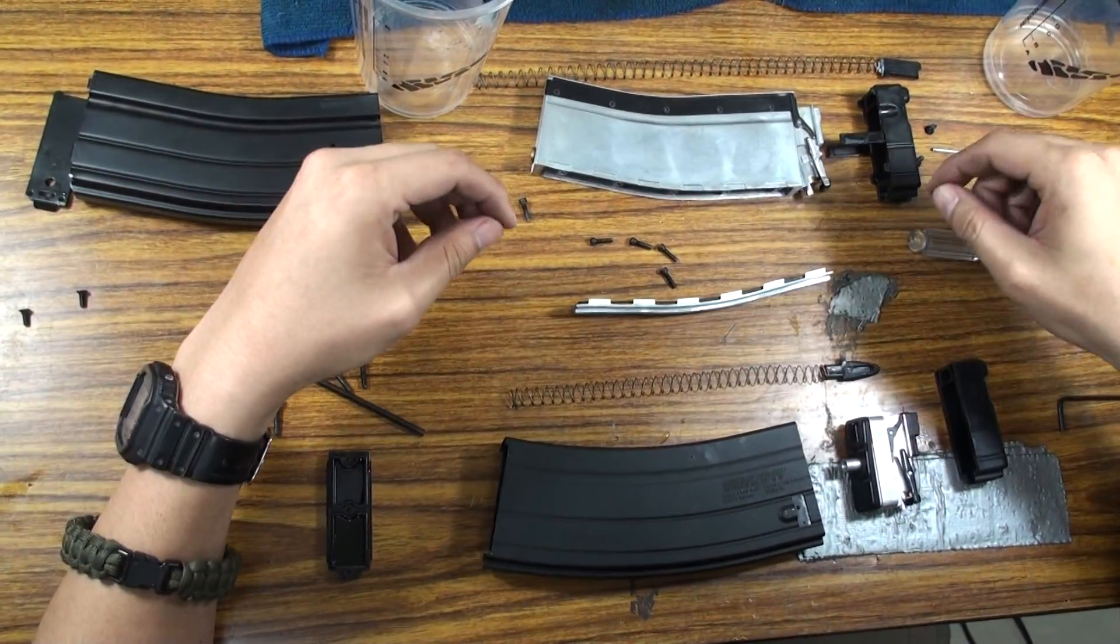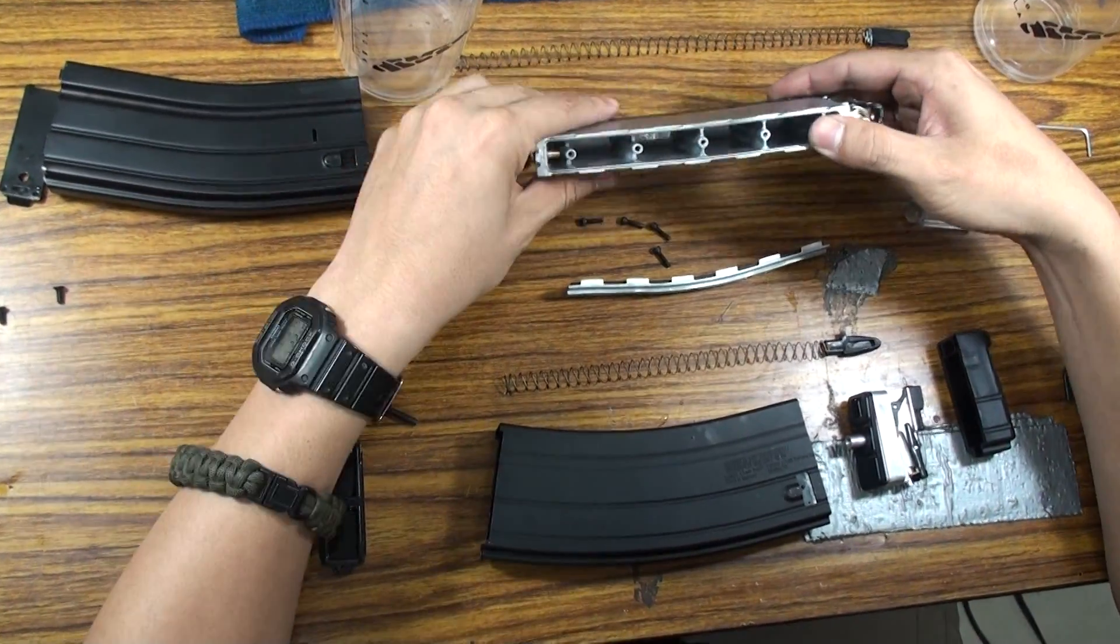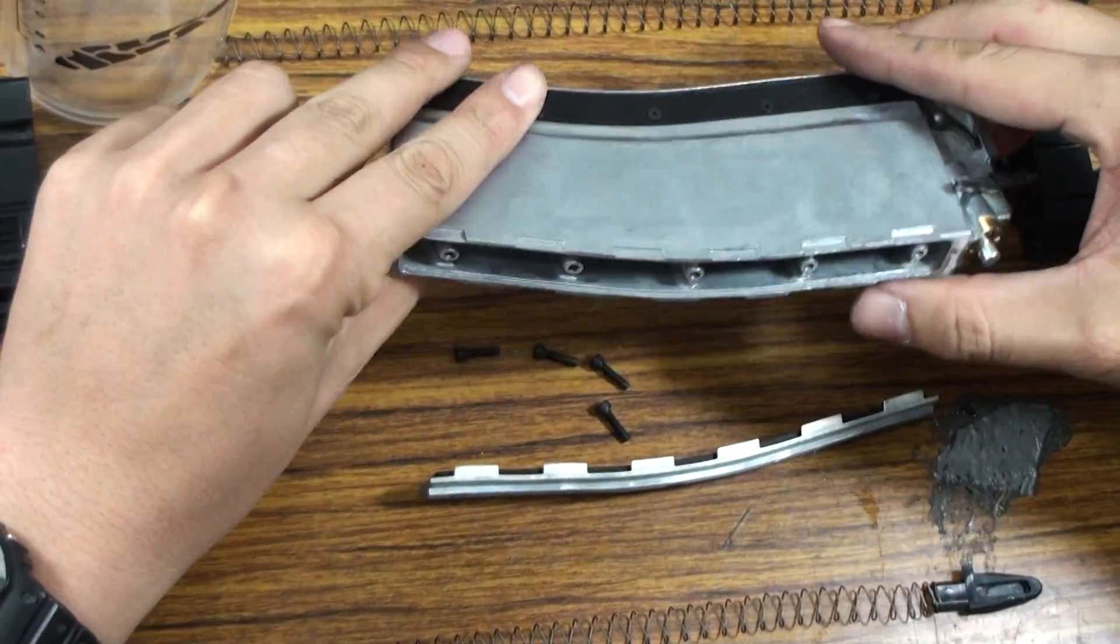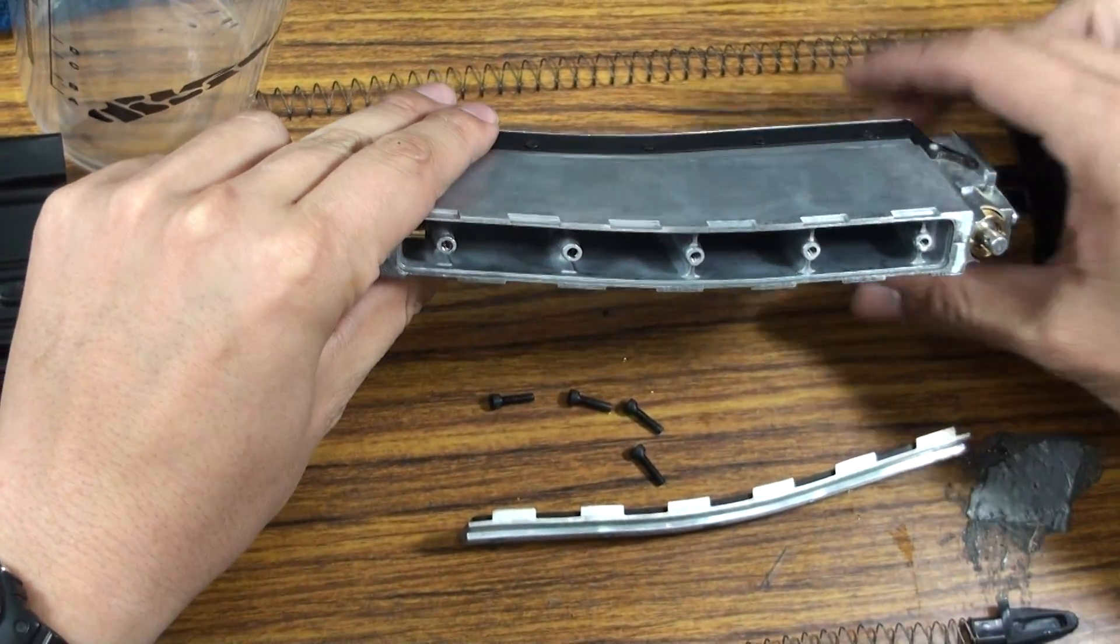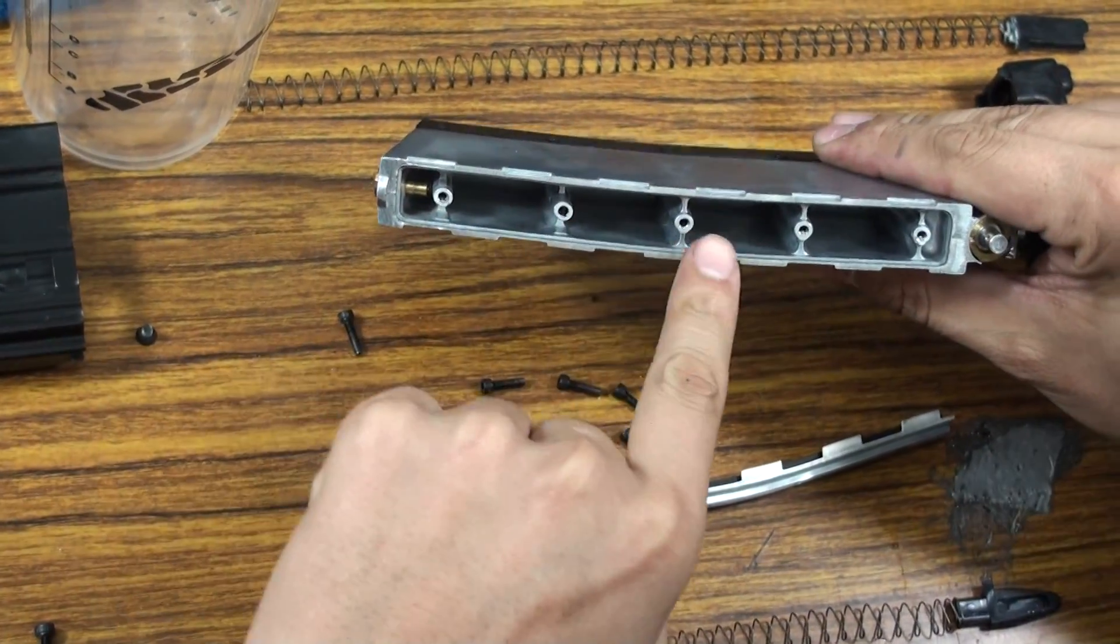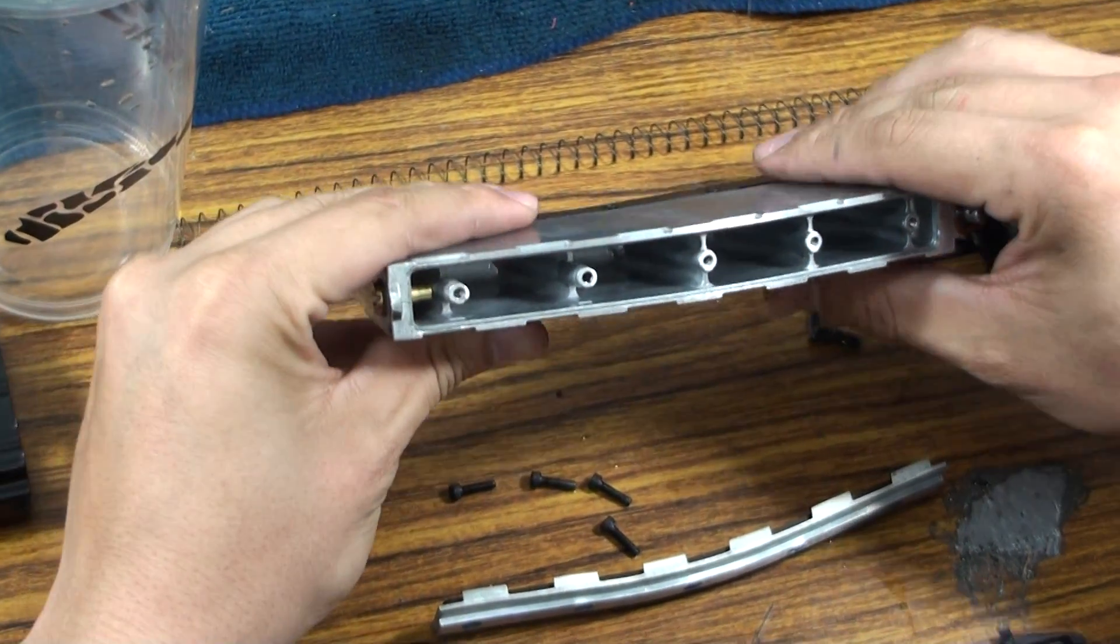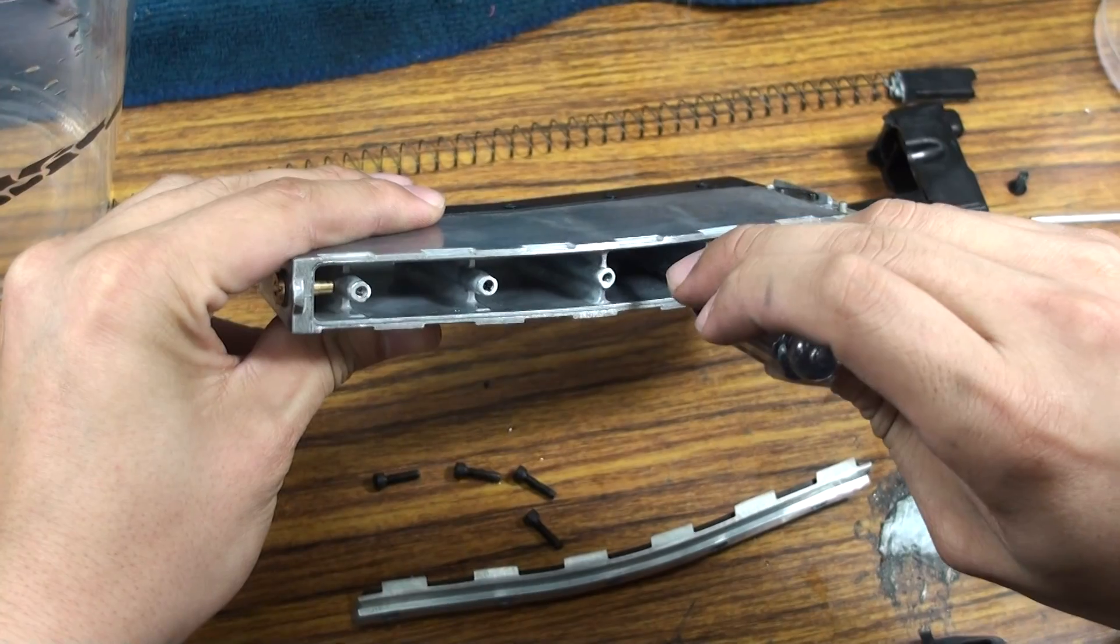If you play GBB for a long time, maybe you can see that the old version's design is similar to the WE product, and there are many tanks inside this old version magazine. If you look deeper into the bottom of this magazine, you can see some small holes.